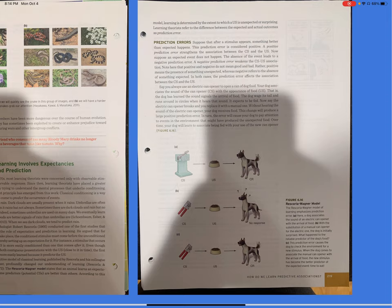Prediction errors. Suppose that after a stimulus appears, something better than expected happens. This prediction error is considered positive. A positive prediction error strengthens the association between the conditioned stimulus and the unconditioned stimulus. Now, suppose an expected event does not happen. The absence of the event leads to a negative prediction error. A negative prediction error weakens the CS-US association. Note here that positive and negative do not mean good and bad. Rather, positive means the presence of something unexpected, whereas negative refers to the absence of something expected. In both cases, the prediction error affects the association between the CS, the conditioned stimulus, and the unconditioned stimulus.